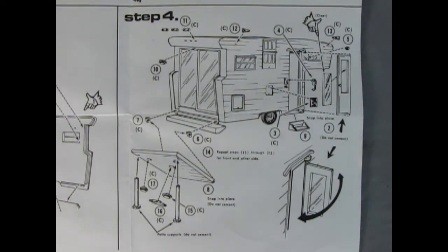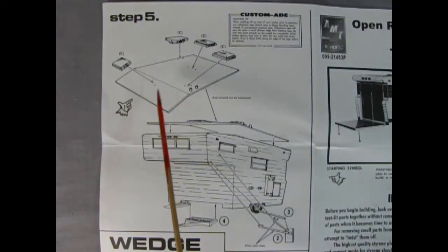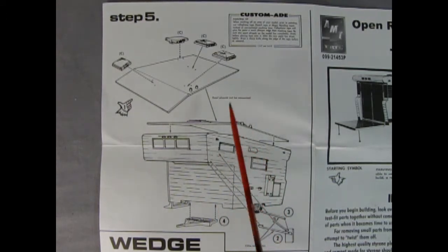Step five shows the roof of our camper being glued into place with a bunch of these different skylights and hatches that you can put on. Here we have a couple of brackets for the rearview mirrors and then a little trailer hitch which will glue up underneath.